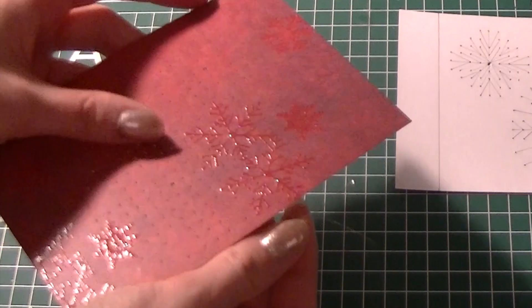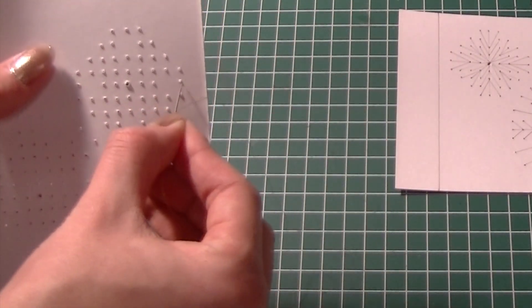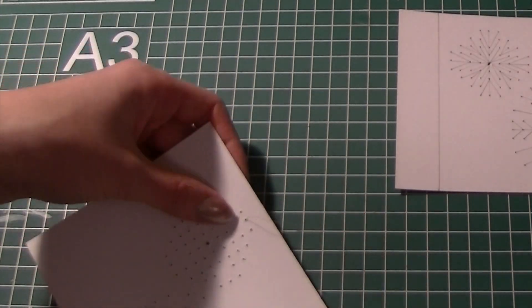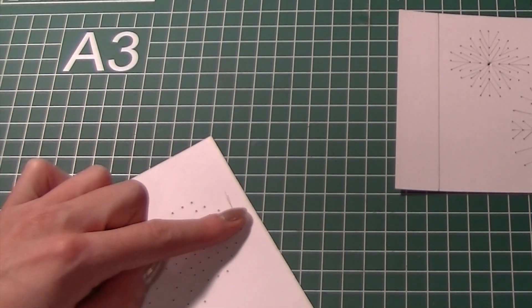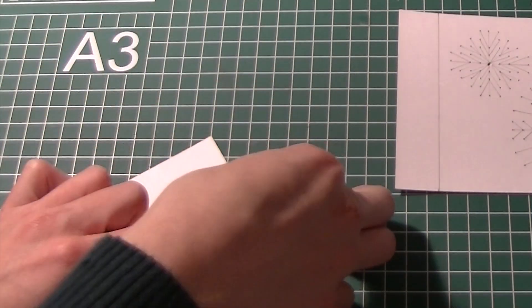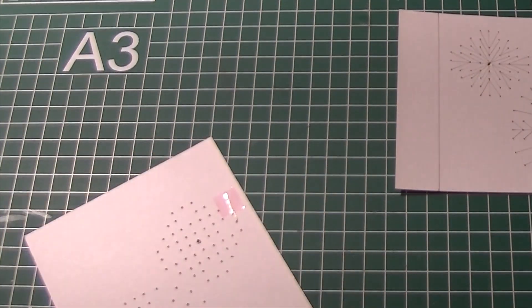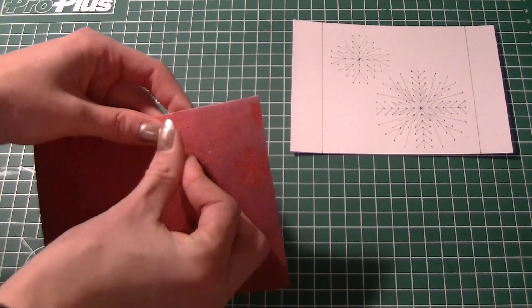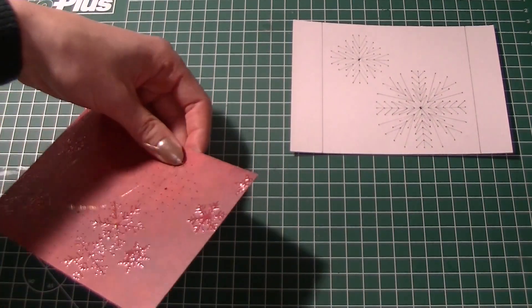Start embroidering from the back of the piece of cardboard. Use some tape to secure the thread on the back. Make the snowflakes by making stitches as indicated on the template.